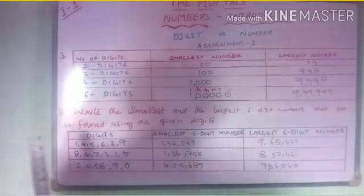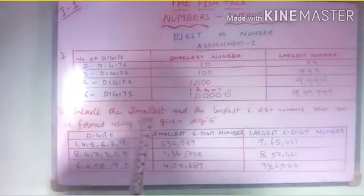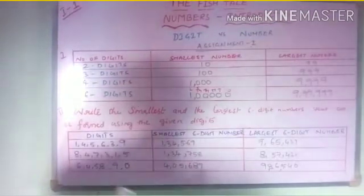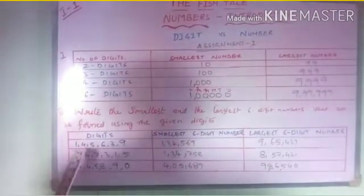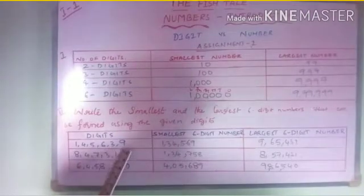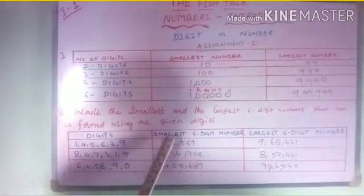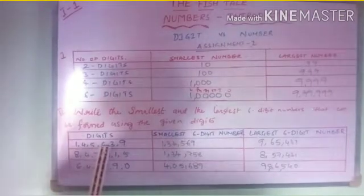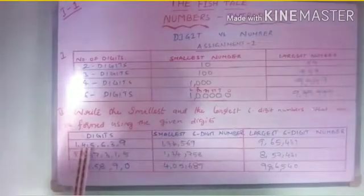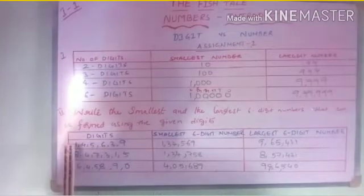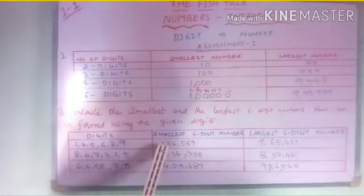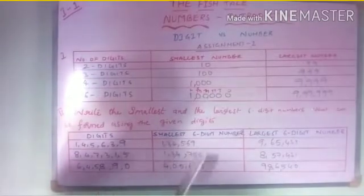The second question: write the smallest and the largest 6-digit numbers that can be formed using the digits 1, 4, 5, 6, 3, and 9. To write the smallest 6-digit number, write the digits in ascending order — the smallest digit first. The smallest here is 1, so 1 is written first, then 3, then 4, then 5, 6, and 9.